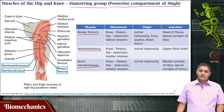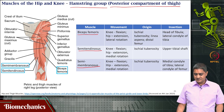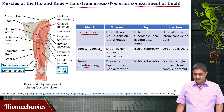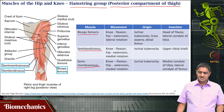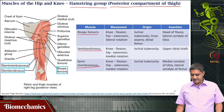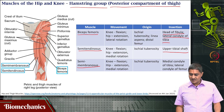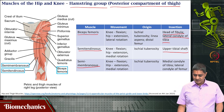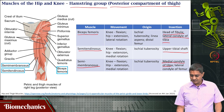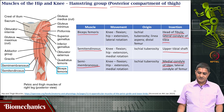All these muscles originate at approximately the same points, close to each other — the ischial tuberosity. They insert at the back of the shank: one of them attaches at the head of the fibula and the lateral condyle of the tibia; semitendinosus attaches at the upper tibial shaft; and semimembranosus attaches at the medial condyle of the tibia and the lateral condyle of the femur. Their purpose differs depending on where they insert.